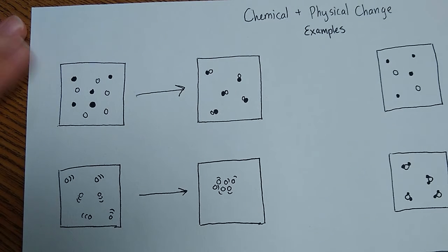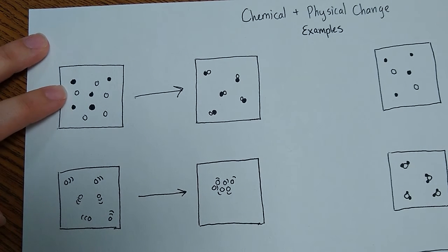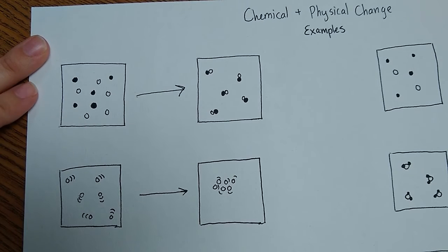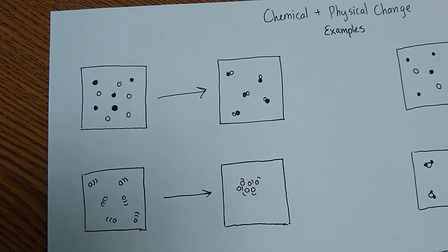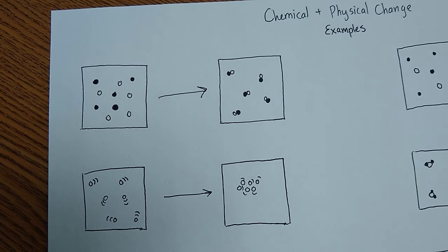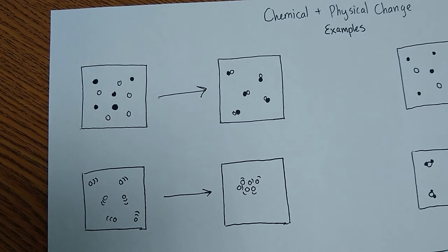So what I want you to remember for each of these things is each little circle represents an atom, and the identity of the atom itself isn't necessarily important for a lot of these ideas to really get across, but remember that each one is just one atom, and the identity of the atom cannot change unless it's radioactive, but that's not something that we're talking about today.